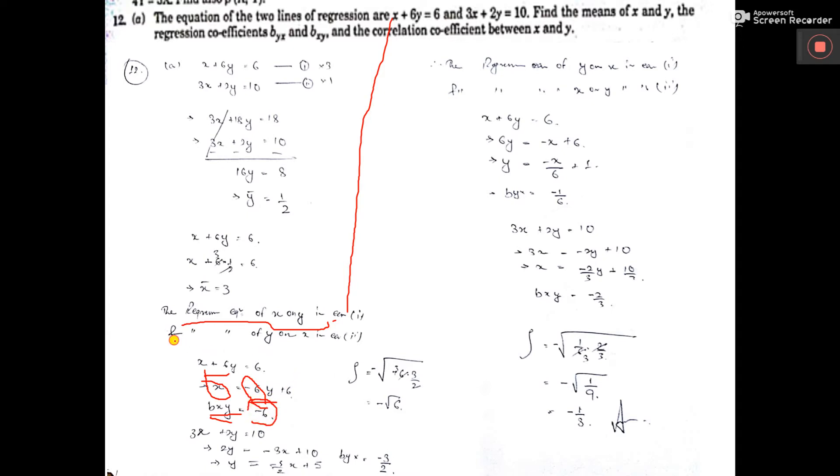Similarly, you have considered regression equation of y on x is equation two. So, from equation two, you find y as a subject. So, coefficient of x is what? Minus three by two. So, minus three by two is byx. Start with y, end with x. So, you have got bxy and byx.